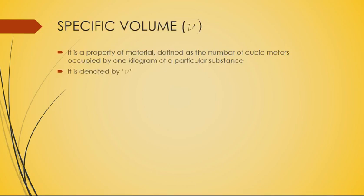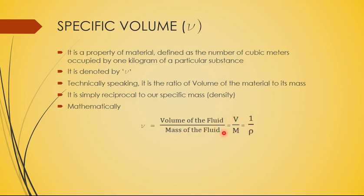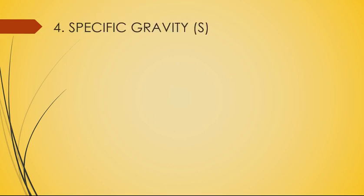The third property is specific volume, which is the reverse of density. It is defined as the number of cubic meters occupied by one kilogram of a particular substance. Mathematically, specific volume equals volume divided by mass (V/m), which is the reciprocal of density: 1/ρ. The units are meter cube per kilogram, which is the reverse of the units for density.